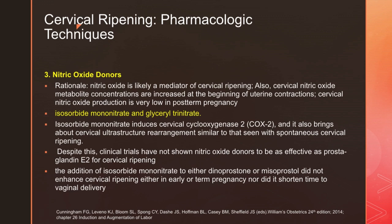The third option is nitric oxide donors. The rationale is that nitric oxide is likely a mediator of cervical ripening, and cervical nitric oxide metabolite concentrations are increased at the beginning of uterine contractions. Cervical nitric oxide production is very low in patients with post-term pregnancy. Nitric oxide donors include isosorbide mononitrate and glyceryl trinitrate. Isosorbide mononitrate induces cervical cyclooxygenase-2 (COX-2) and brings about cervical ultrastructure rearrangement similar to spontaneous cervical ripening. However, clinical trials have not shown that nitric oxide donors are as effective as prostaglandins for cervical ripening.